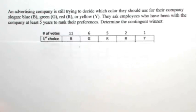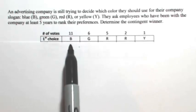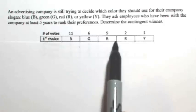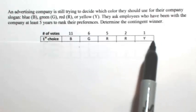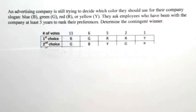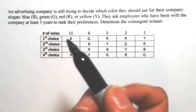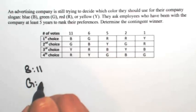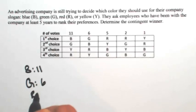Going through each one, we'll see which one has which first choice votes. So B has 11, G has 6, R will have 7 together, and Y has 1. So these are first choice votes: B with 11, G with 6, R with 7, and Y with 1.